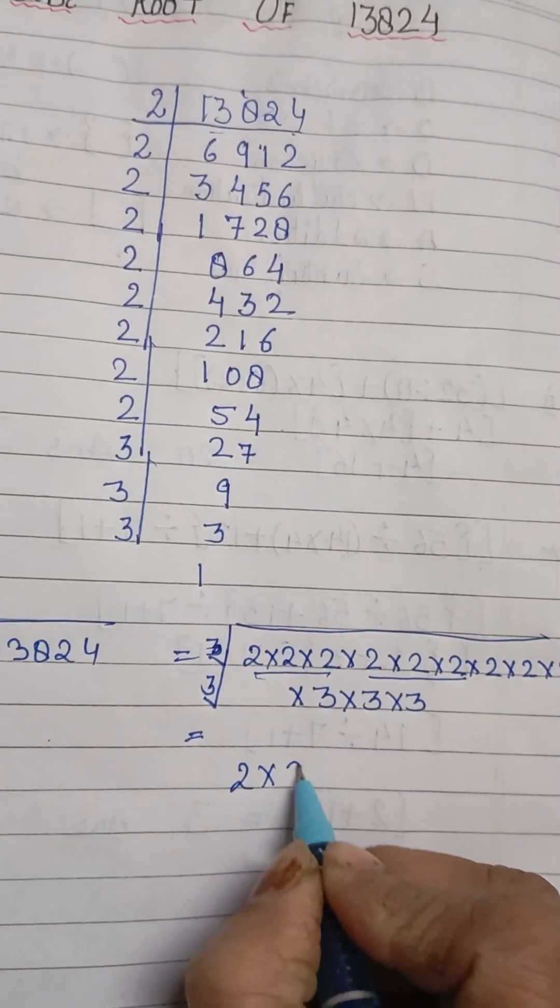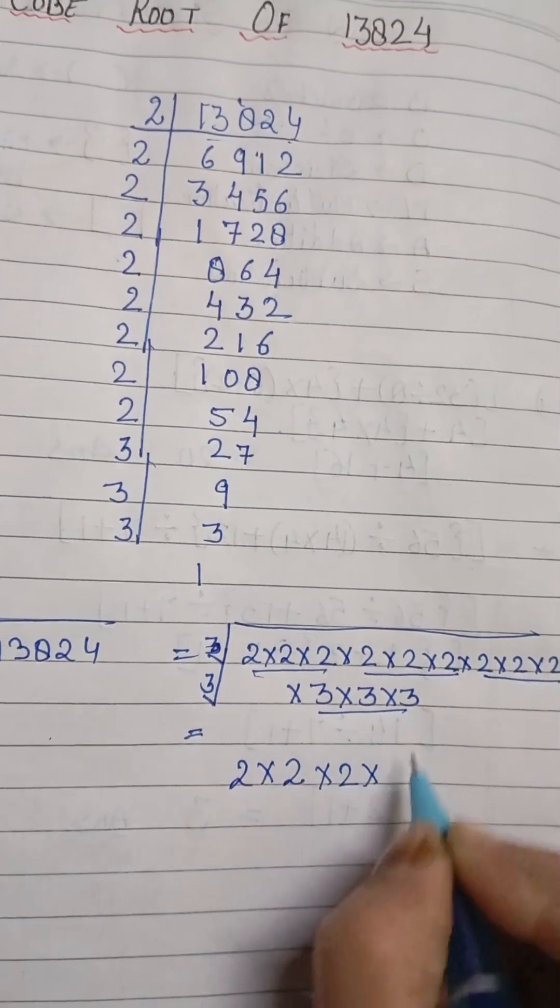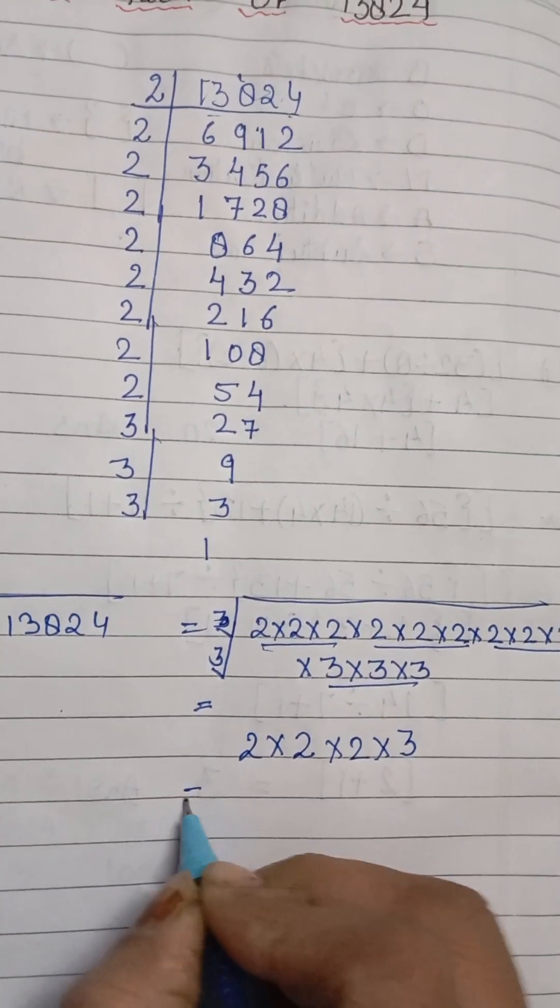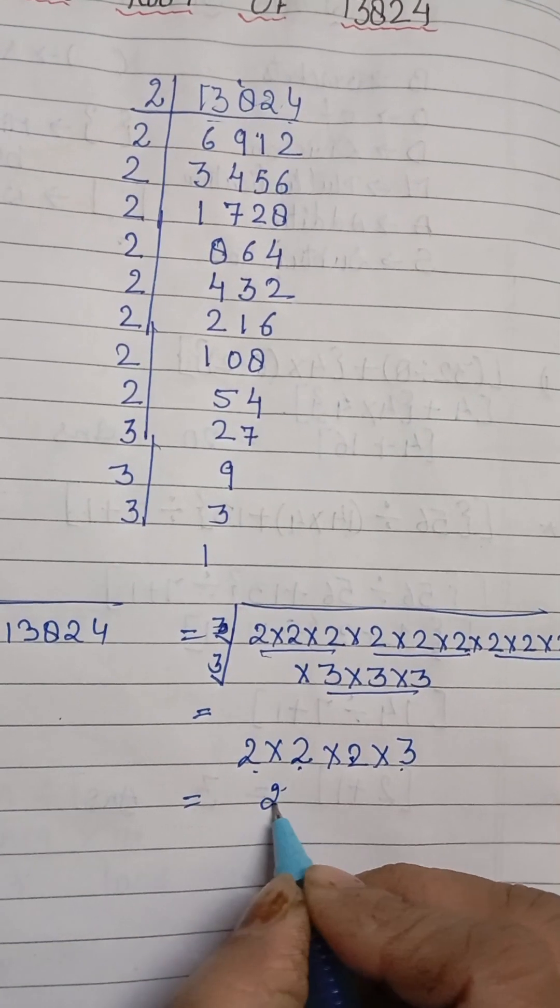3 times 2 then again multiplied by 2 then 3, so the final answer is 2 times 2 is 4, 4 times 2 is 8, and 8 times 3 is 24.